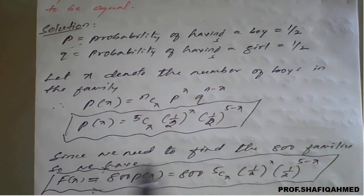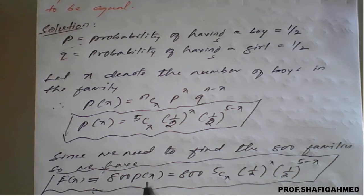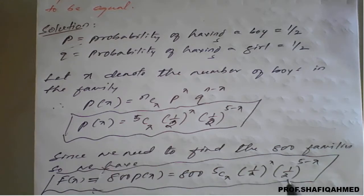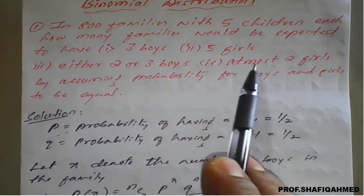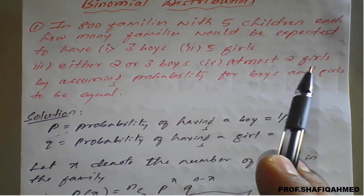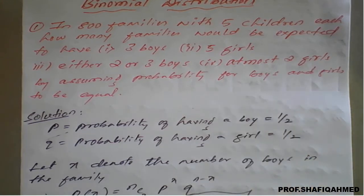Since we need to find results for 800 families, we write the expected frequency function F(x) = 800 × P(x) = 800 × 5Cx × (1/2)^x × (1/2)^(5−x). In this formula we will apply the values for 3 boys, 5 girls, either 2 or 3 boys, and at most 2 girls, and find the respective results out of 800.